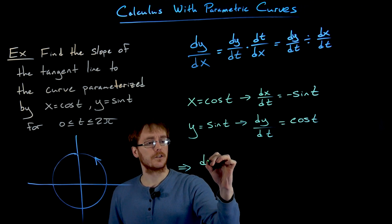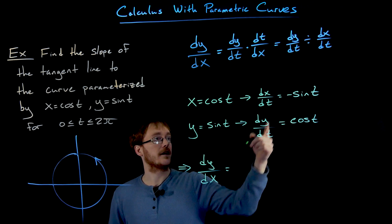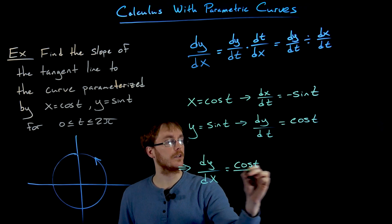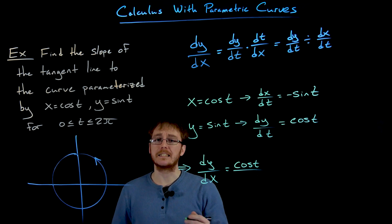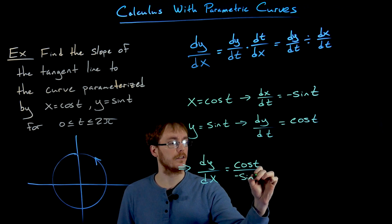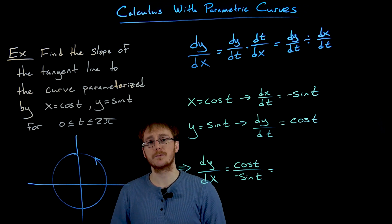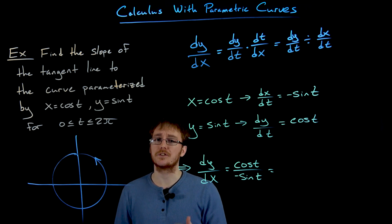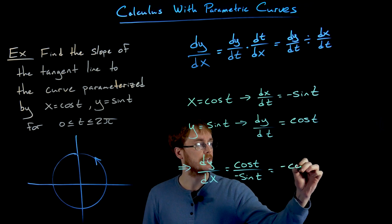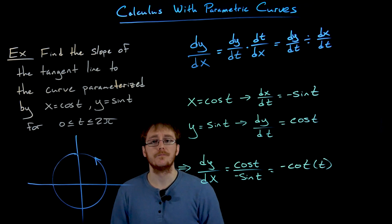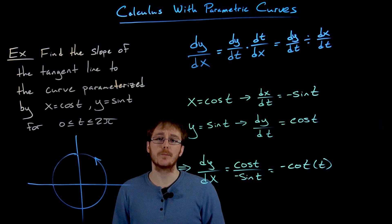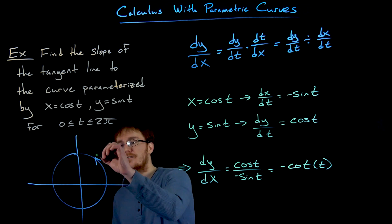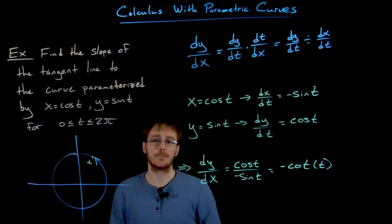To finish constructing dy/dx, we take our derivative for y with respect to t — dy/dt equals cosine of t — and divide by dx/dt, which was negative sine of t. We can simplify using the quotient trig identity: cosine over sine is cotangent, so we end up with negative cotangent of t. We can now use this slope formula to find the slope of any tangent line along our parameterized circle by finding the corresponding t value to the point of interest.